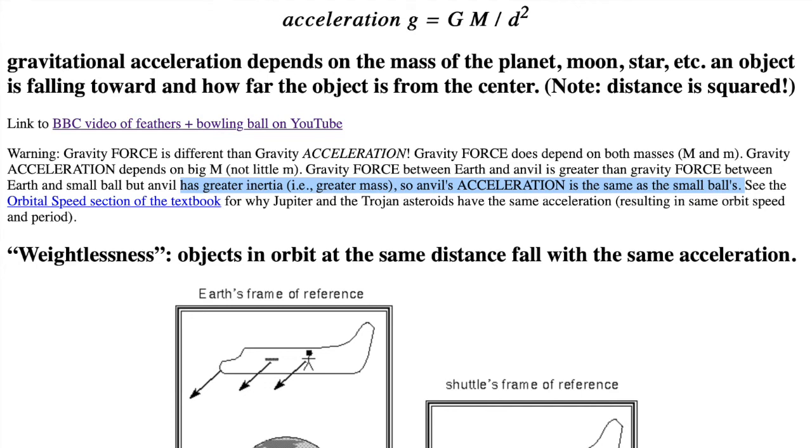The gravity force between Earth and the anvil is greater than the gravity force between Earth and the small ball. However, the anvil has greater inertia, that is, greater mass. So, the anvil's acceleration is the same as the small ball's. In the Astronomy Notes textbook, I talk about the huge planet Jupiter and the tiny Trojan asteroids having the same acceleration because they orbit the sun at the same distance. That same acceleration results in them having the same orbit speed and orbit period.